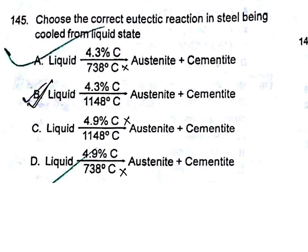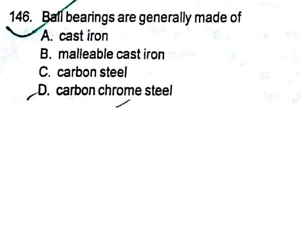Ball bearings are generally made of: A) cast iron, B) malleable cast iron, C) carbon steel, D) carbon chrome steel. The answer is D — carbon chrome steel.